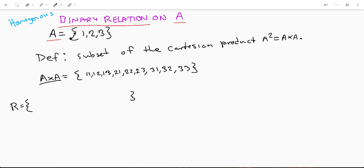If we have a set A and we take a binary relation on A, that's going to be a subset of the Cartesian product of A squared, A cross A, which is all of these pairs.